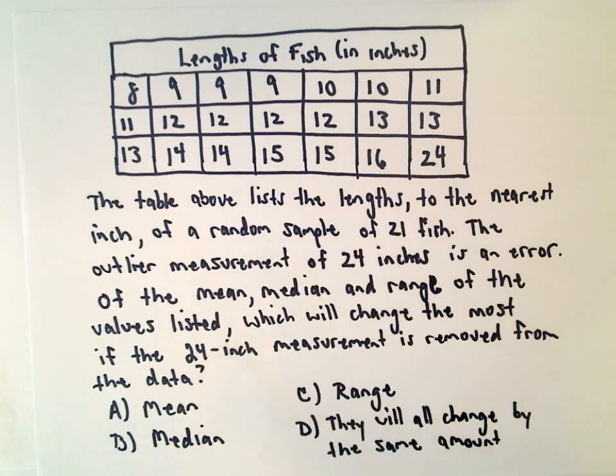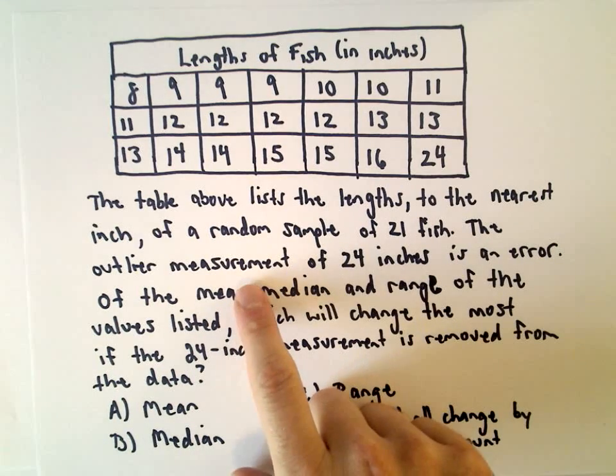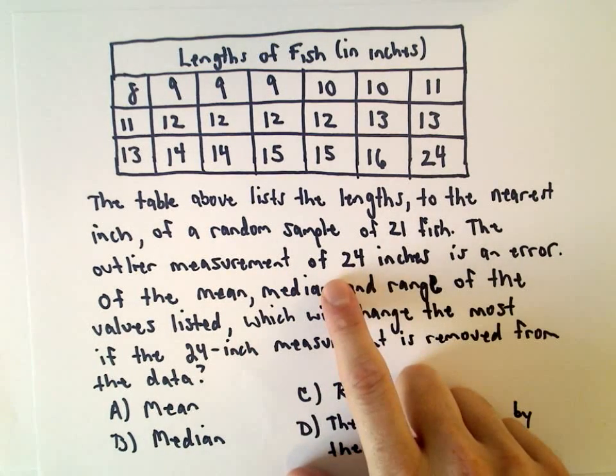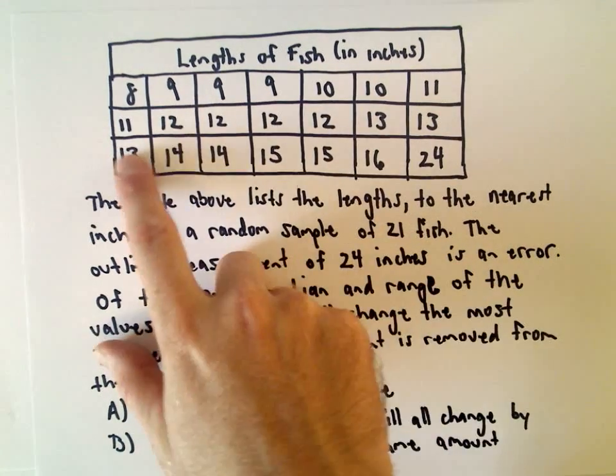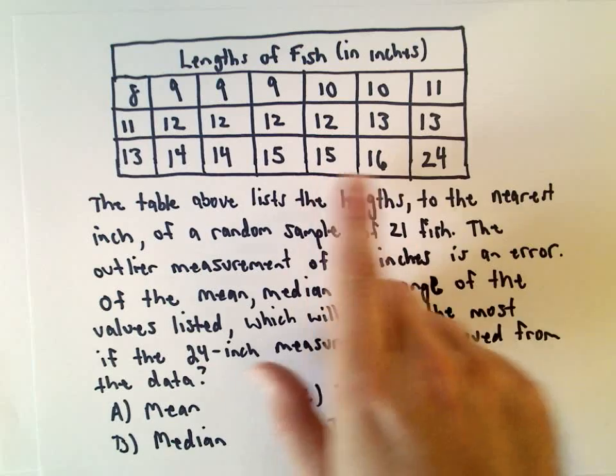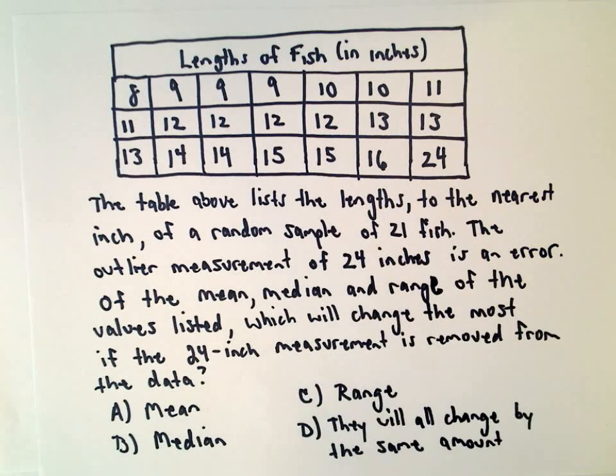The table above lists the lengths to the nearest inch of a random sample of 21 fish. The outlier measurement of 24 inches is an error. We've got eight, nine, nine, a couple tens, some 11's, 12's, 13's, 14's, 15's, 16's, then we have this big measurement of 24.